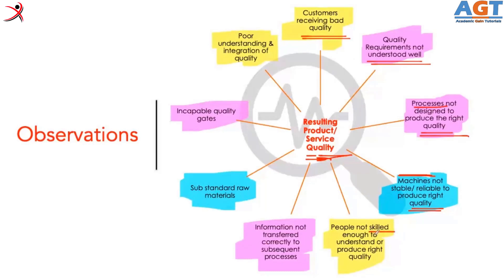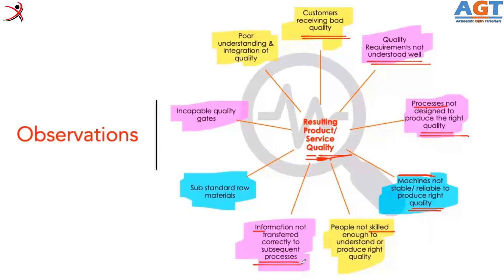People not skilled, or information not transferred correctly to subsequent processes. Maybe some information was not transferred by the marking team to the cutting team, or the cutting team forgot to put a particular notch in the cut parts. When received by the sewing lines, they missed putting a particular dart, and it was only found at the AQL point. So the entire garment had to be ripped through and the dart redone — one mistake at a particular process leads to several other mistakes in all subsequent processes.